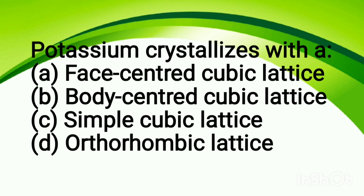Potassium crystallizes with: option A, face-centered cubic lattice; option B, body-centered cubic lattice; option C, simple cubic lattice; option D, orthorhombic lattice. The correct answer is body-centered cubic (BCC) lattice. Other examples that crystallize in BCC are lithium, sodium, rubidium, and cesium. Generally, alkali metals crystallize in BCC form. For first and second group elements, BCC is a reliable choice if you need to guess.